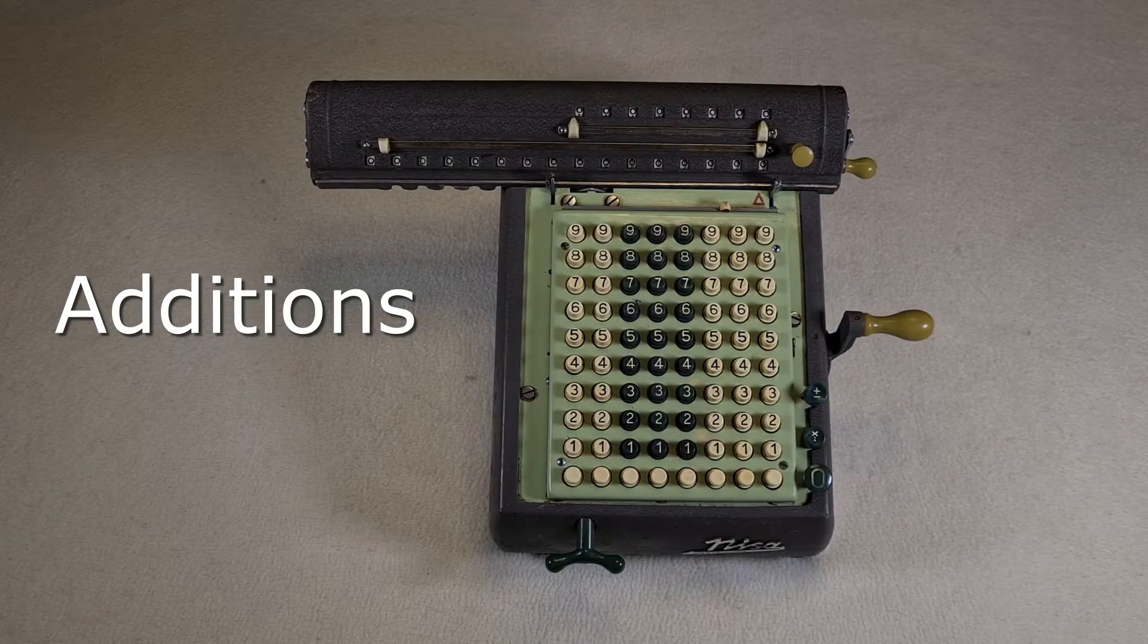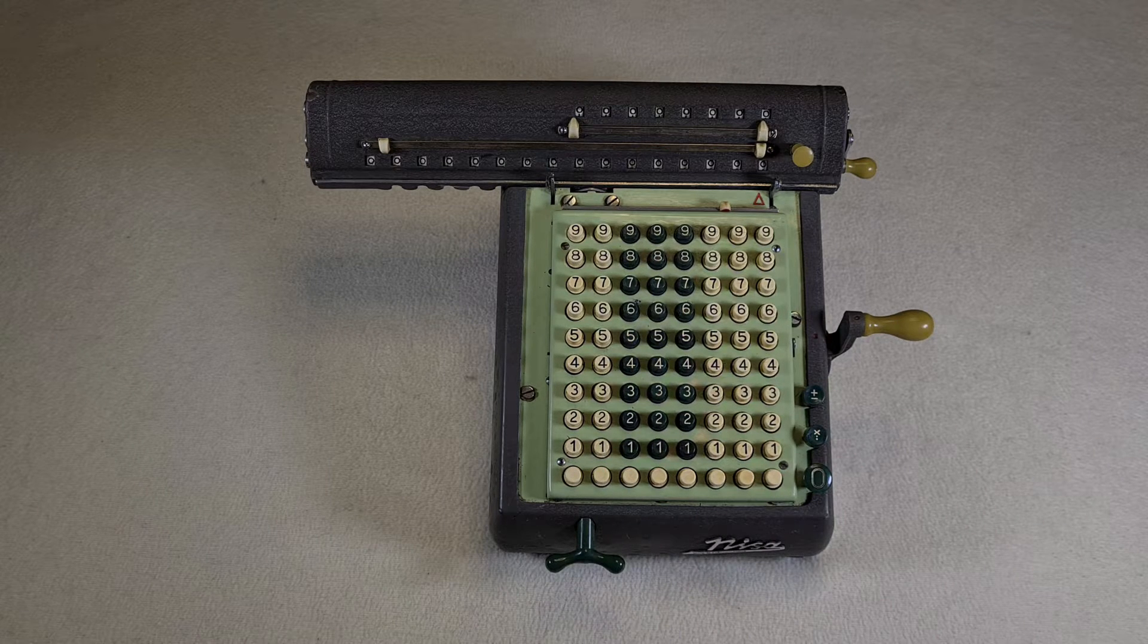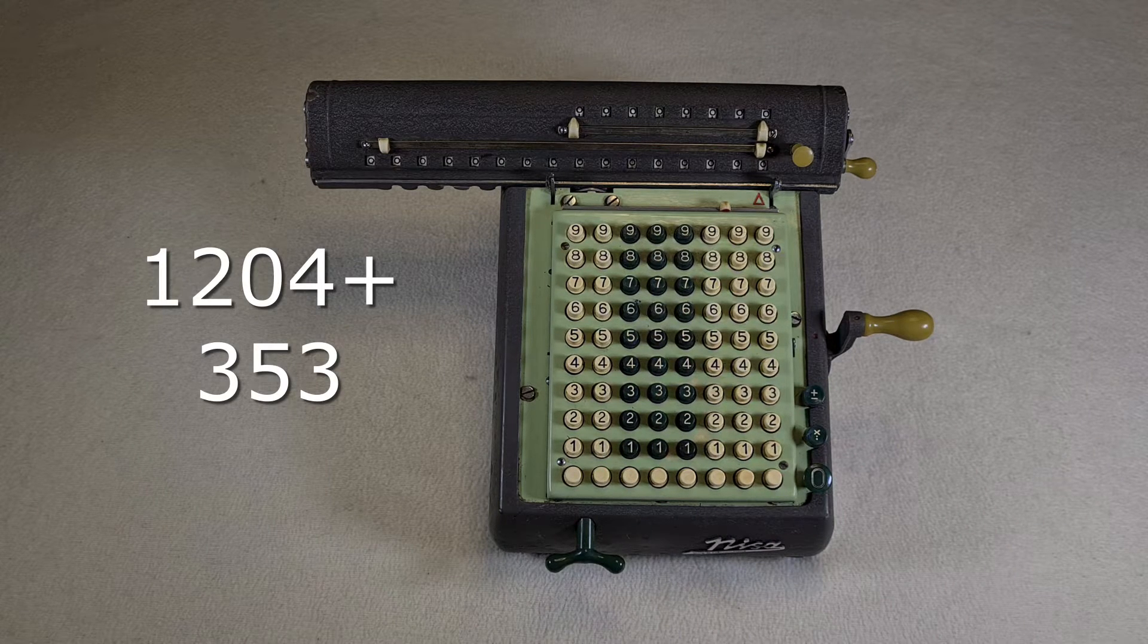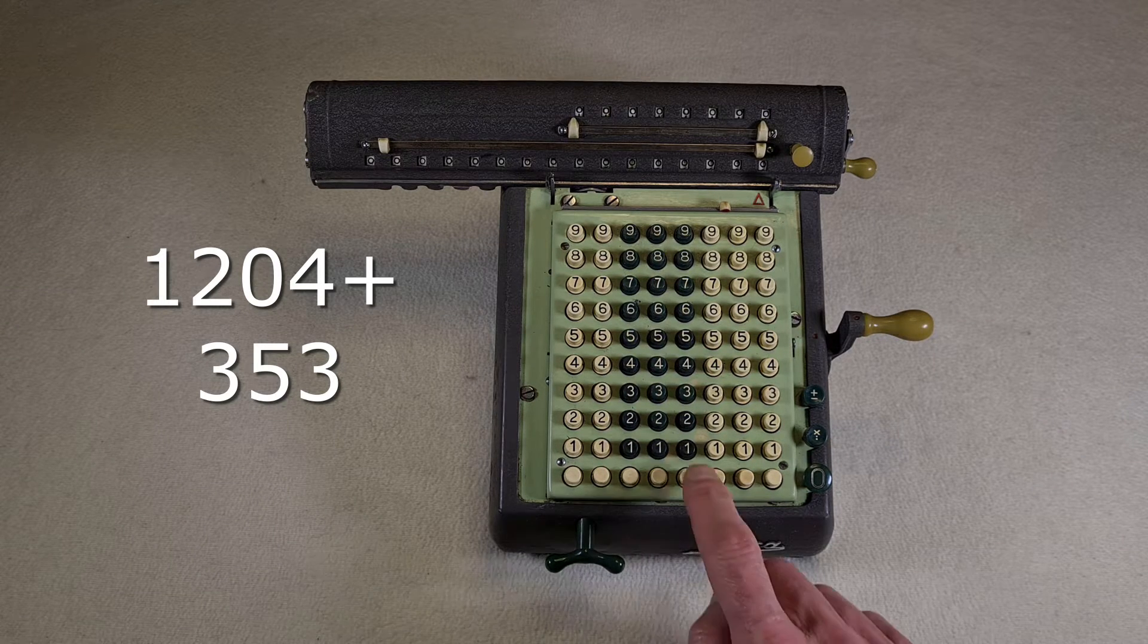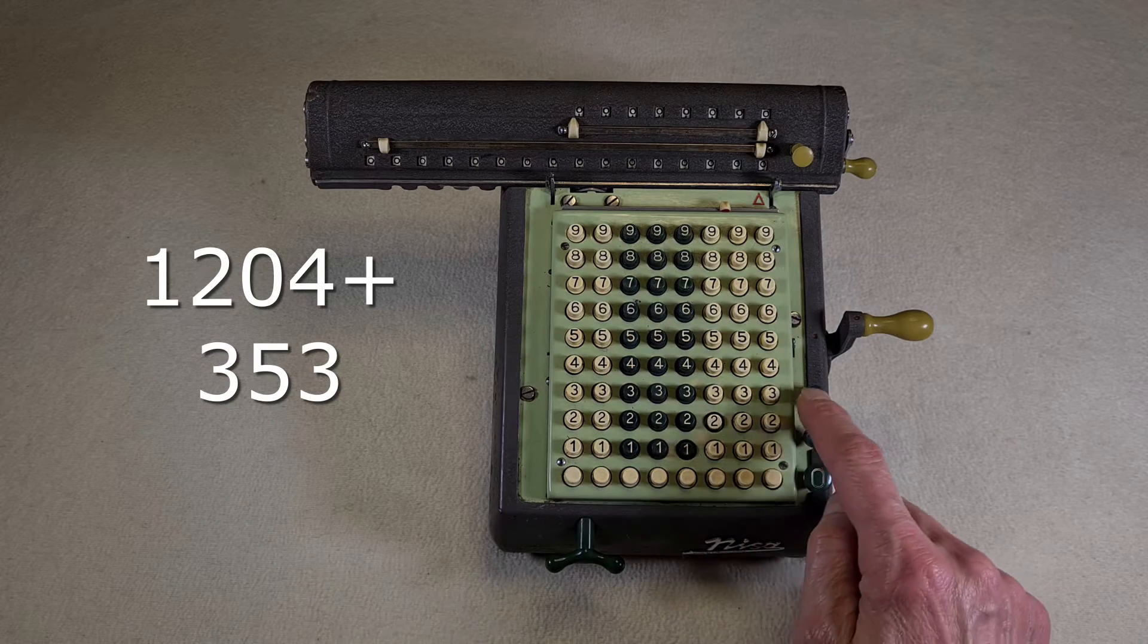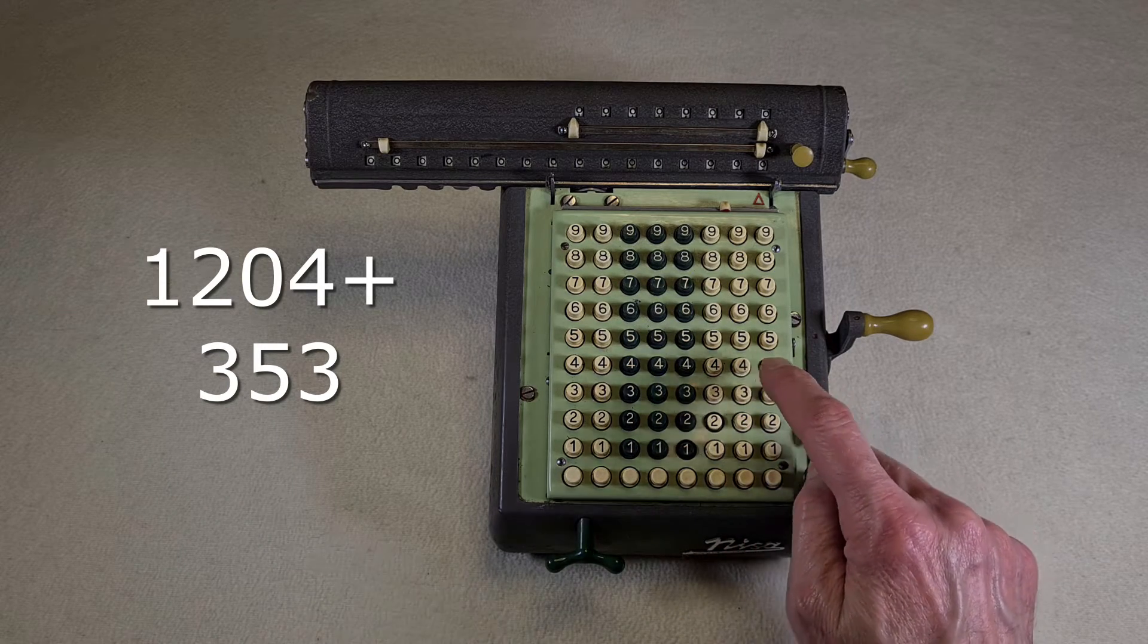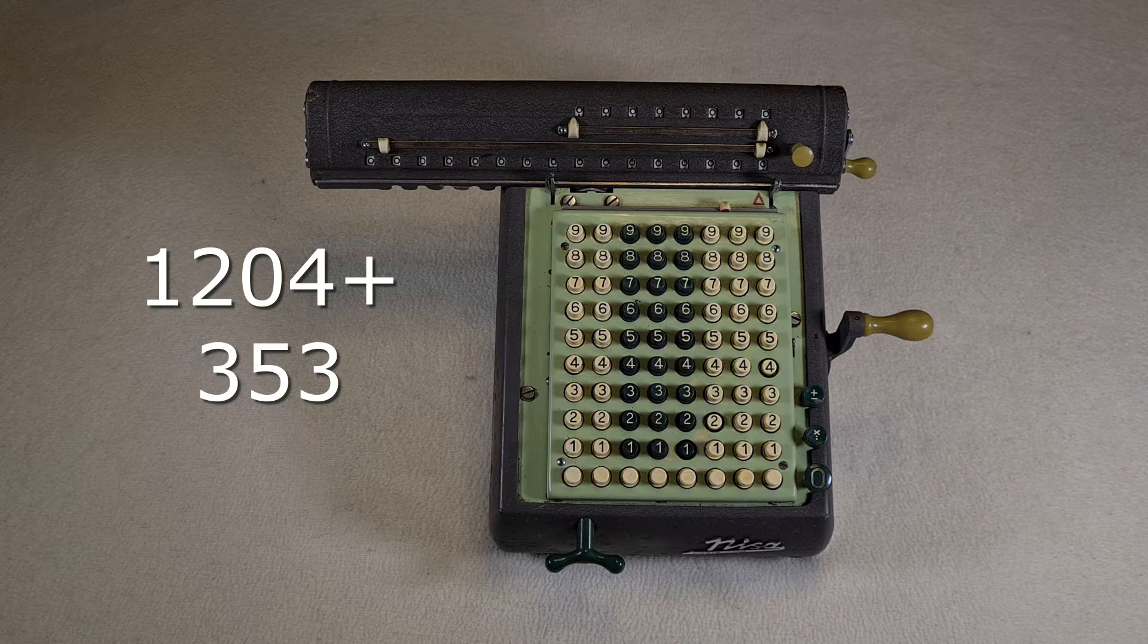Additions. You push the button here for the additions. Let's say 1204 plus 353. So it's one here in the thousands, two in the hundreds, when there is a zero you don't need to press anything, and four in the units.